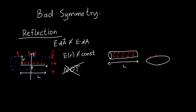A ring of charge has rotational symmetry, but there's no Gaussian surface we can choose that gives a nice simple integral. Similarly, half a sphere doesn't actually have spherical symmetry, so Gauss's law doesn't easily apply there either.